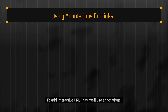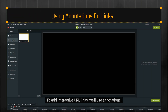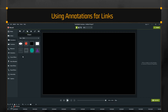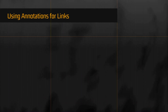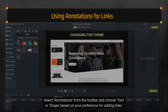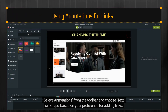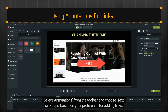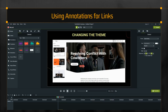To add interactive URL links, we'll use annotations. These can be text boxes, shapes, or even clickable icons that you can place directly onto your video. Select annotations from the toolbar and choose text or shape based on your preference for adding links.